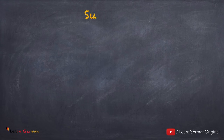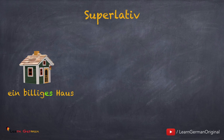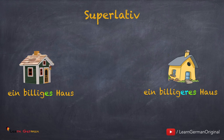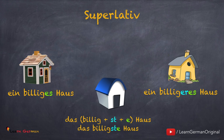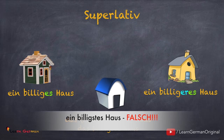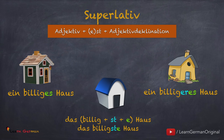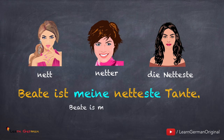Und hier sind ein paar Beispiele für Adjektive im Superlativ. Ein billiges Haus. Ein billigeres Haus. Das billigste Haus. Mit der Superlativform benutzt man keine unbestimmten Artikel. Wenn ich sage ein billigstes Haus — das ist falsch. The rule here is also similar to the one for Komparativ: you use the adjective plus the ending st oder est plus the Adjektivendung.